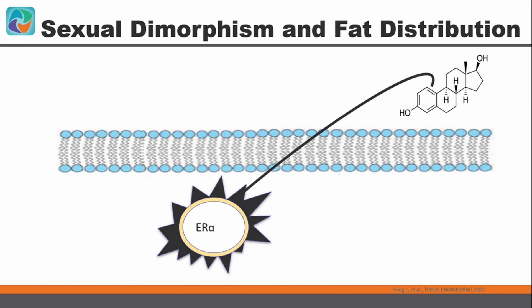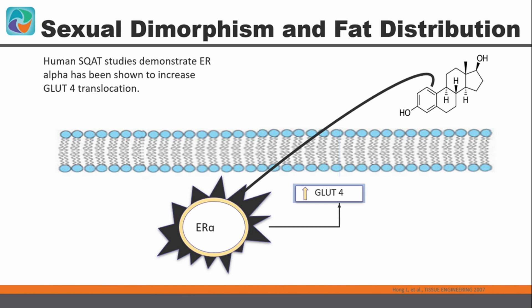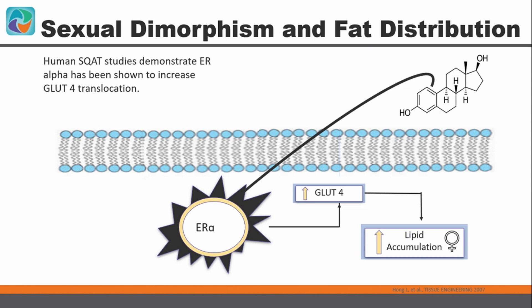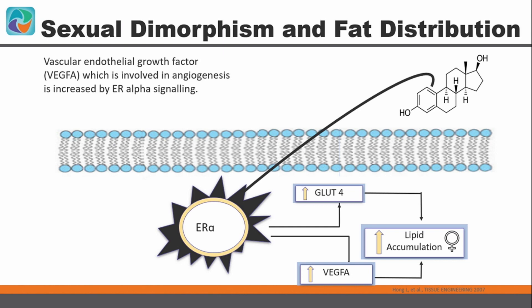I want to explain a little bit about adipose tissue — this represents an adipocyte — and how estrogen signaling is working. We have the ER-alpha receptor, and also beta, but we came from the perspective of ER-alpha first because of the way that estrogen interacts with it. Estrogen binds to the ER-alpha receptor, and studies from human subcutaneous adipose tissue — that lower body fat — have demonstrated that ER-alpha actually causes an increase in the GLUT4 transporter, which allows the cell to take in more glucose and store more nutrients, leading to an accumulation of lipid.